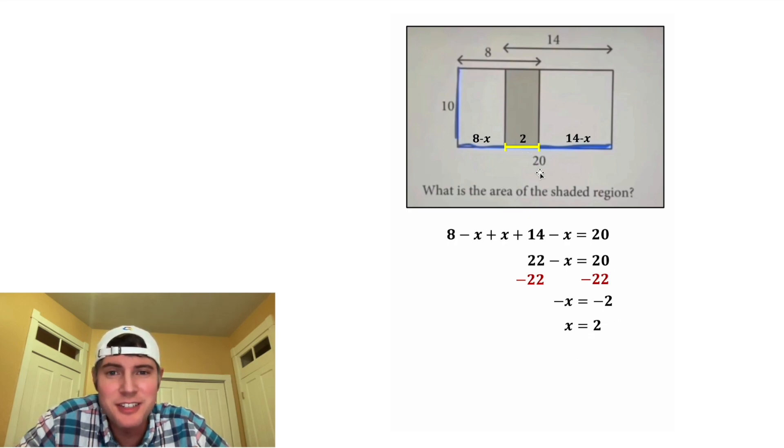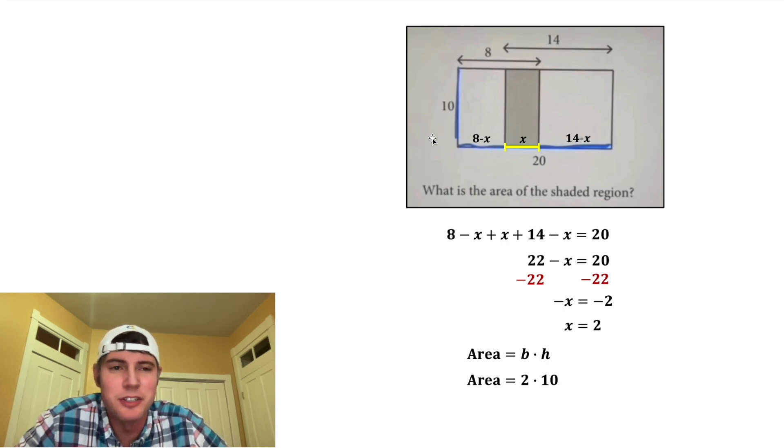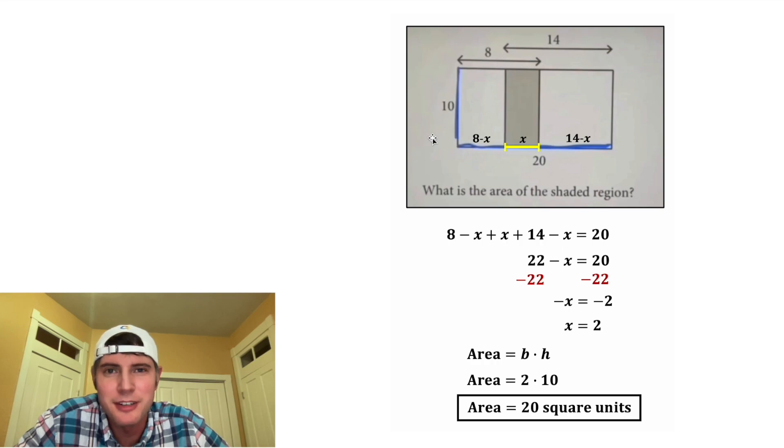So let's update this X to 2. And now we're ready to find the area of our region. It's going to be the base times the height, where the base is equal to 2 and the height is equal to 10. And that's going to give us 20 square units. And that's the answer to our question. Let's put a box around it. How exciting.